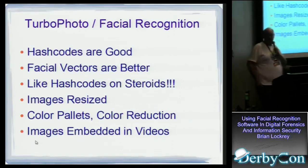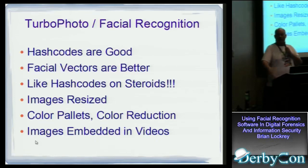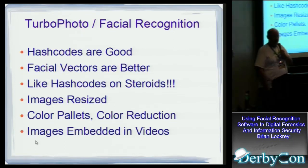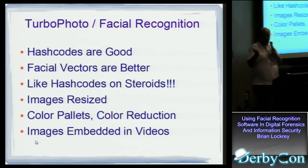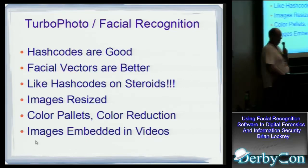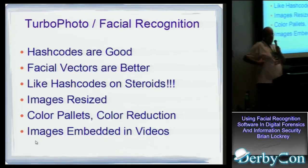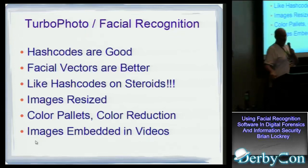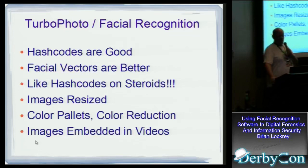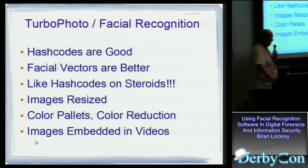To answer the earlier question: hash codes are good for a null image or one that's been catalogued, like by the Center for Missing and Exploited Children. Facial vectors are a whole lot better — they're like hash codes on steroids. Images can be resized, color palettes adjusted, converted to black and white, or reduced from 16 million colors to much fewer. We're also able to go through an entire full-length two- or three-hour movie and pick out individual frames and match those against our database.